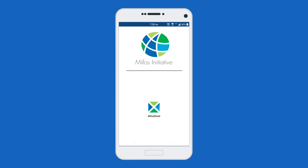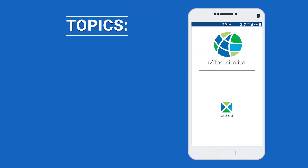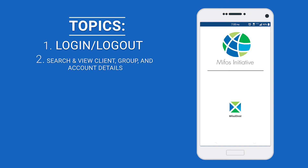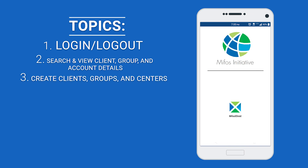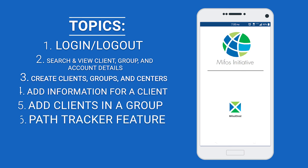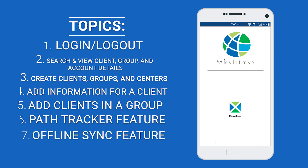That's going to end this demonstration video on the MIFOS X Android client. To recap, I covered seven topics. The first is how to log in and out of the application. The second is how to search and view client, group, and account details. The third is how to create client groups and centers. The fourth is how to add specific information for a particular client. The fifth topic is how to add clients in a group. The sixth topic is how to use the path tracker feature. And the seventh topic is how to use the offline sync feature.